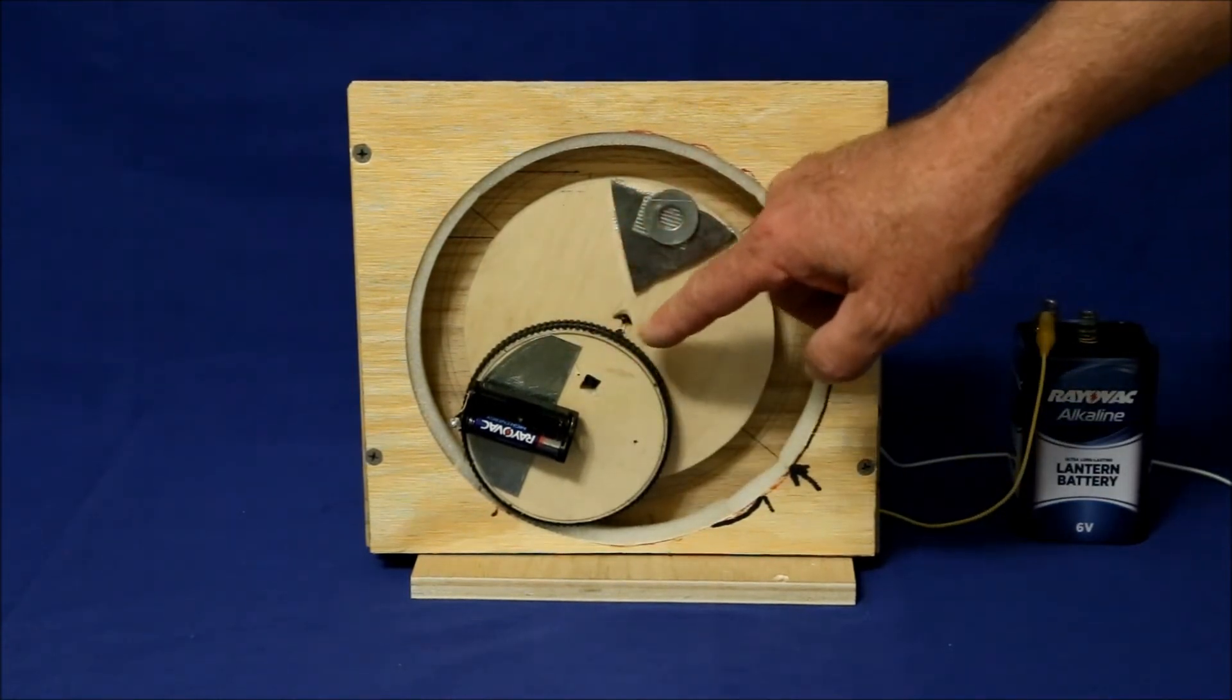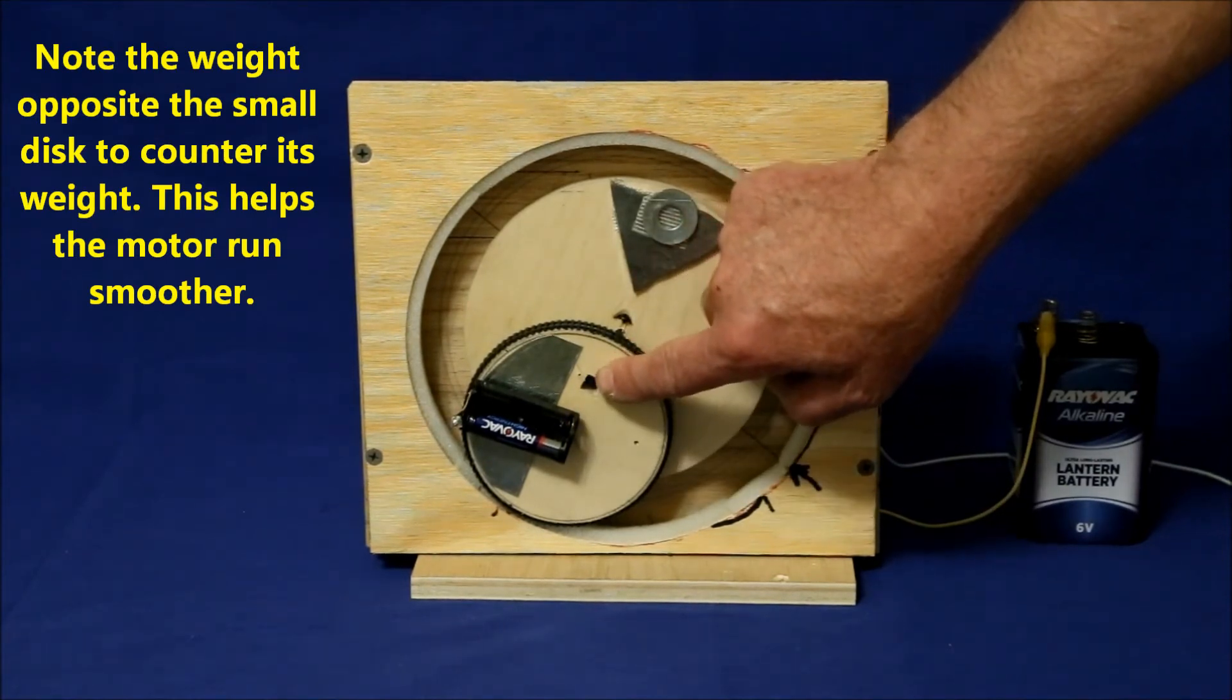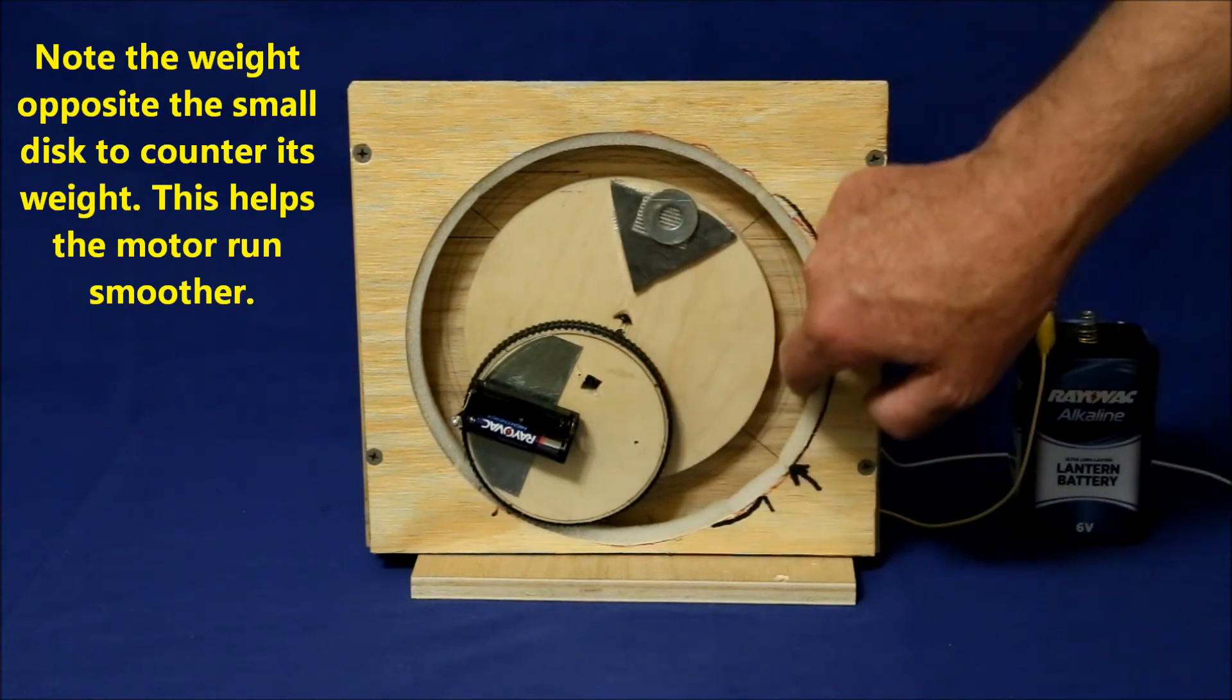A secondary wheel rides on the main disc and is rotated through a friction drive against the outer stationary ring.